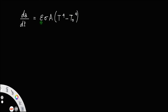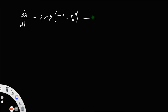Here, epsilon represents the emissivity, sigma represents the Stefan-Boltzmann constant, A represents the surface area of the body, T is the absolute temperature of the body, and T₀ is the temperature of the surrounding or the enclosure. Let us call this equation number 1.